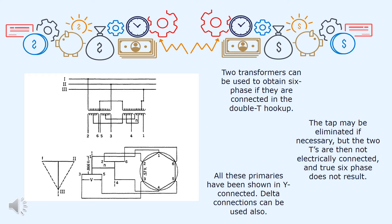In this slide, two transformers can be used to obtain six-phase if they are connected in a double T hookup as shown in this figure. Para ma-obtain ang neutral point, a special secondary tap is needed. This tap may be eliminated if necessary, but the two T's are then not electrically connected and true six-phase does not result.